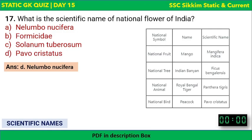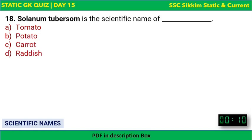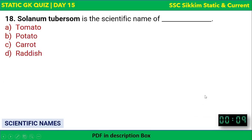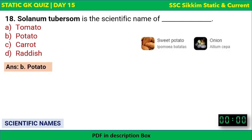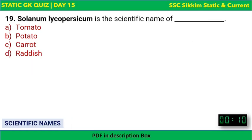Solanum tuberosum is the scientific name of which plant? The options are tomato, potato, carrot, or radish. The correct answer is potato. Additionally, sweet potato's scientific name is Ipomoea batatas, and onion's scientific name is Allium cepa.